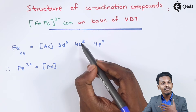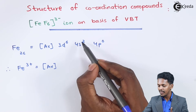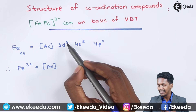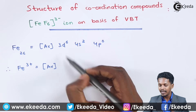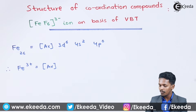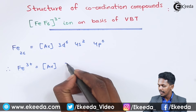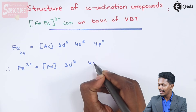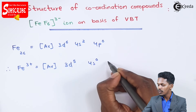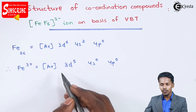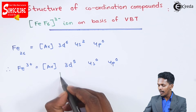Two electrons will be lost from the 4s orbital and one electron will be lost from the d orbital. Therefore, the electronic configuration of Fe³⁺ is 3d⁵ 4s⁰ 4p⁰.